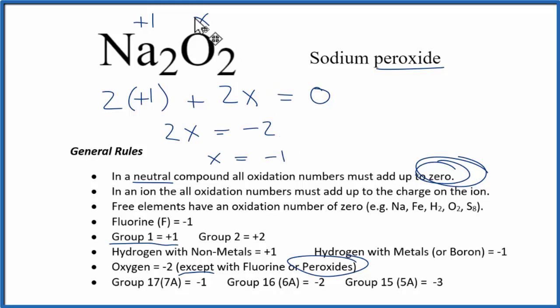So the oxidation number on each one of those oxygens here in Na2O2, that's going to be minus 1. So those are the oxidation numbers for sodium peroxide, Na2O2.